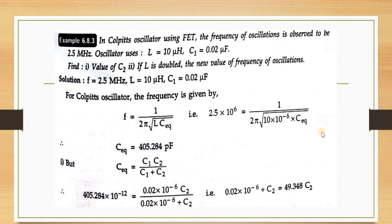The last problem under the Colpitts oscillator uses a FET as the active device. The frequency of oscillation formula remains F = 1/(2π√(L·C_eq)). Given: F = 2.5 MHz, L = 10 μH, C1 = 0.02 μF. Calculate the unknown C2, and then find the new frequency if L is doubled.